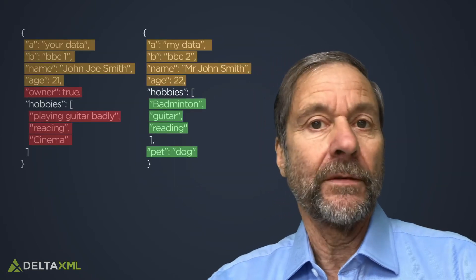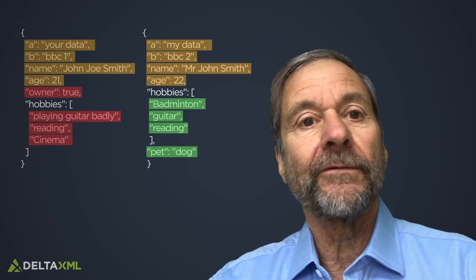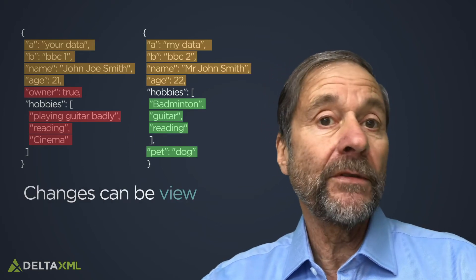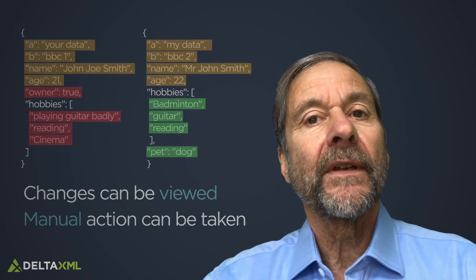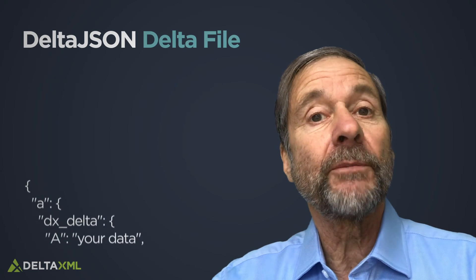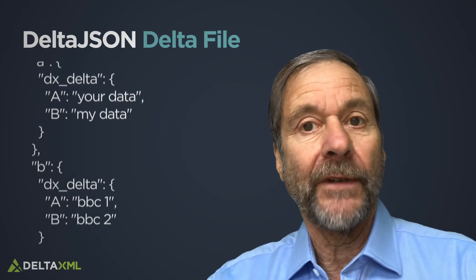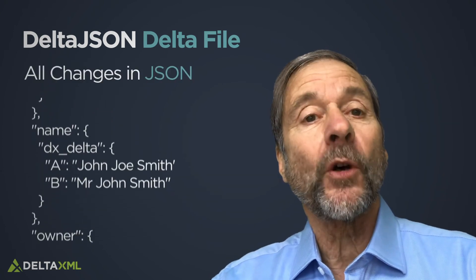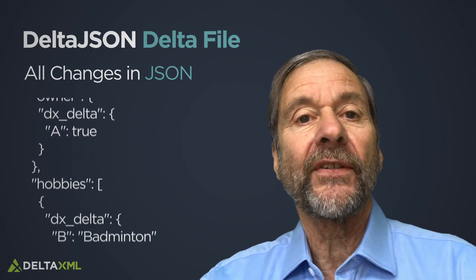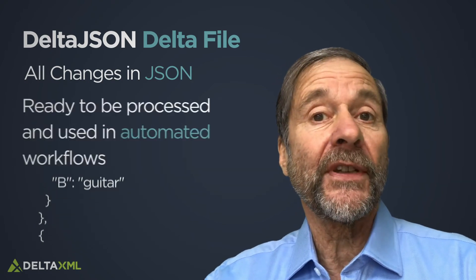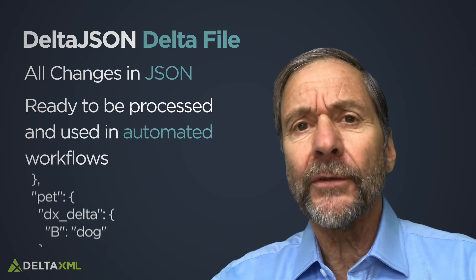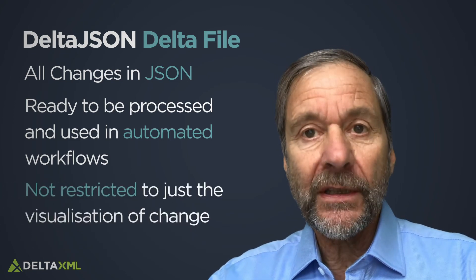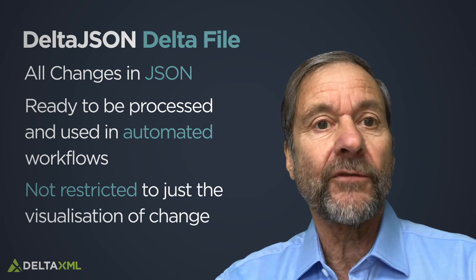Most existing tools aim to provide a visual comparison between two JSON files so that these can be viewed and some manual action taken based on the results. Our aim from the start has been to produce a JSON Delta file which represents all of the changes in JSON, so that you can process and use this in an automated way. This makes it a much more powerful tool because it's not restricted just to the visualisation of changes.